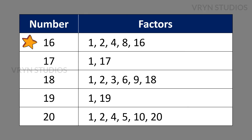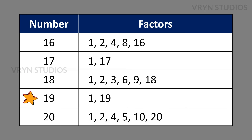The factors for the number 16 is 1, 2, 4, 8 and 16. The factors for the number 17 is 1 and 17. The factors for the number 18 is 1, 2, 3, 6, 9 and 18. The factors for the number 19 is 1 and 19. The factors for the number 20 is 1, 2, 4, 5, 10 and 20.